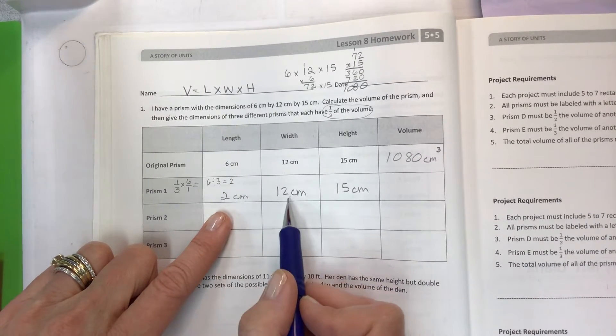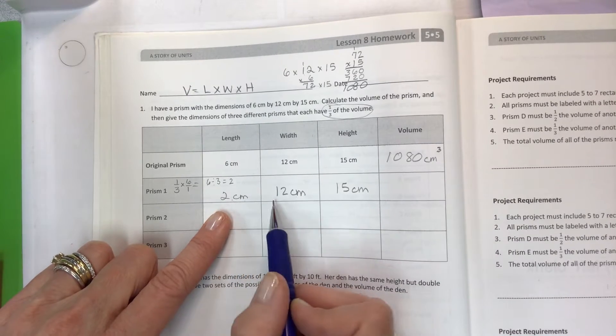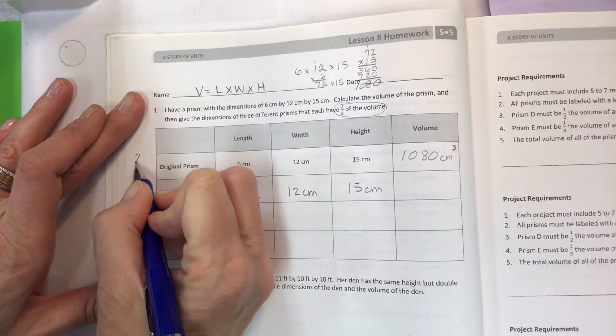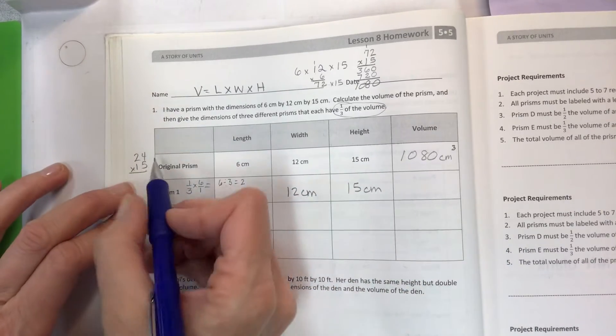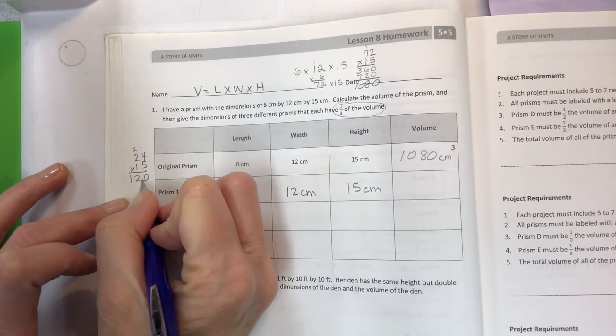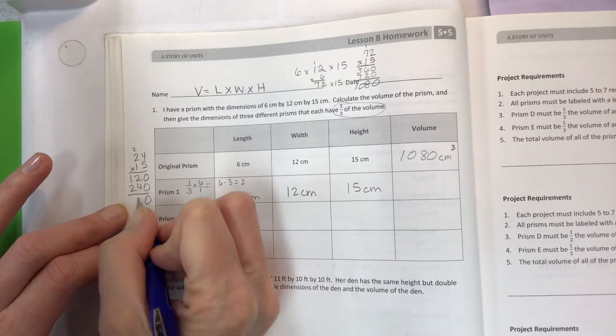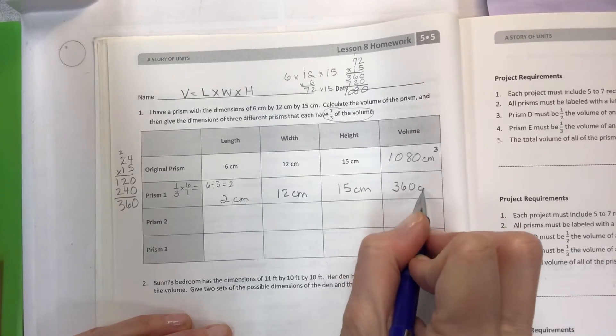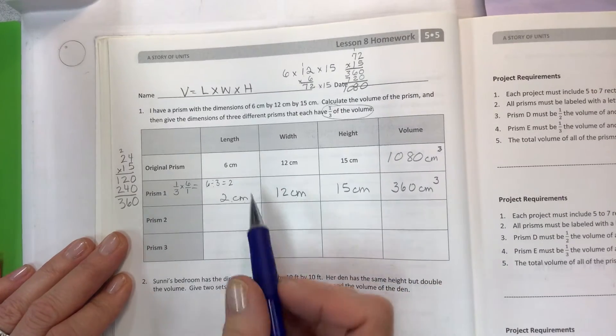So I'm going to go ahead and calculate my volume with length times width times height here. 12 times 2 is 24, and since we're limited on space, I'm just going to come out here in the margin and do 24 times 15. 5 times 4 is 20, then we have 10 plus 2 is 12, then hold the 0, then 1 times 4 is 4 and 1 times 2 is 2. Add, add, add and we get 360 centimeters cubed.